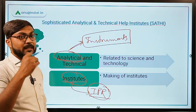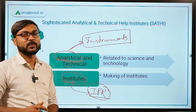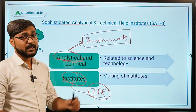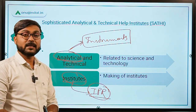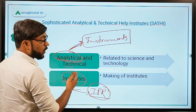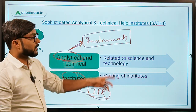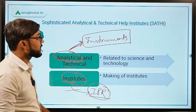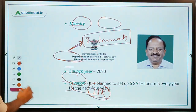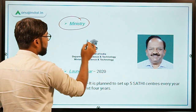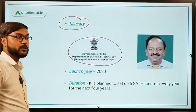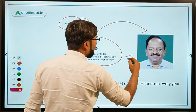These institutes will also help in intellectual property rights creation and their protection. In our country, IP rights creation has not been done adequately, so these institutes will address that. These are the two main objectives of institutes set up under the SATHI initiative, which is under the Ministry of Science and Technology, Department of Science and Technology.